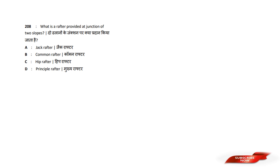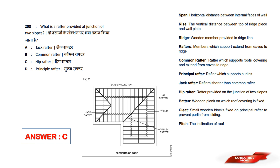What is the name of the rafter provided at the junction of two slopes? The rafter provided at the junction of two slopes — answer option C.